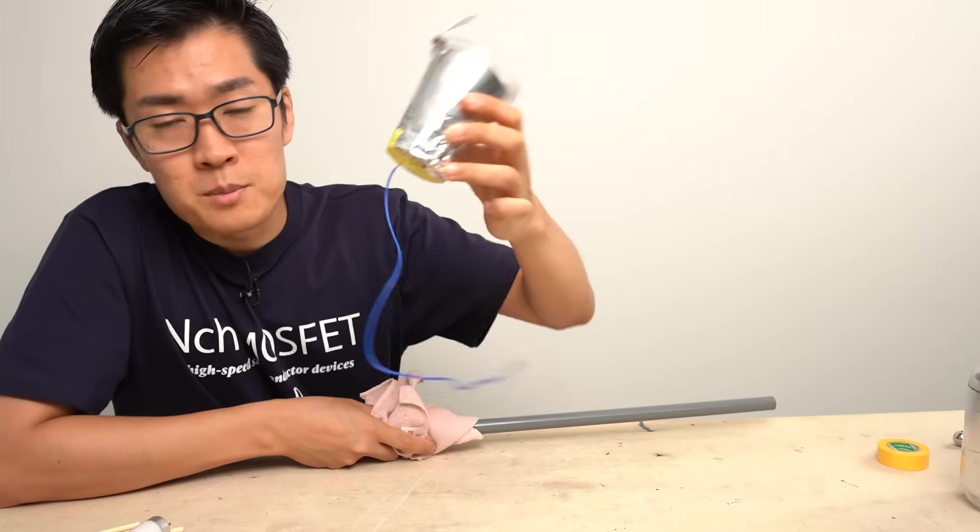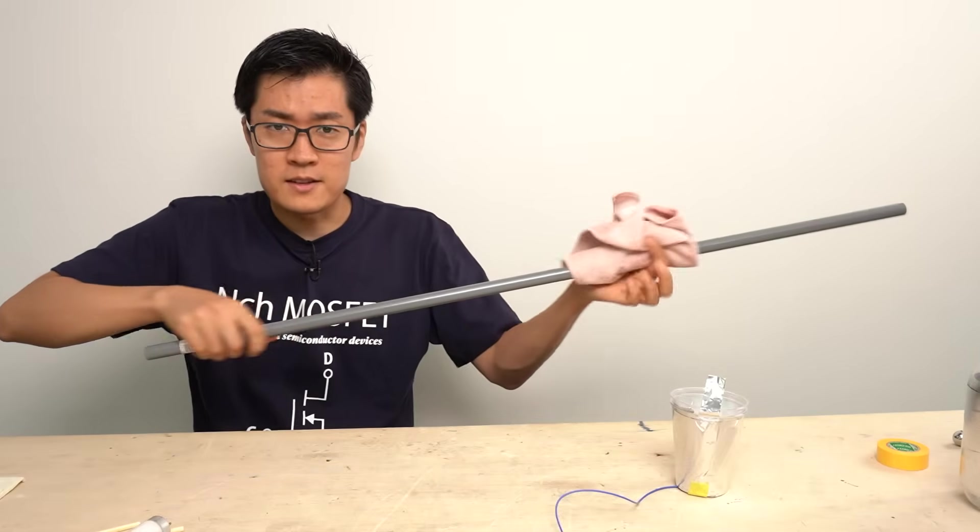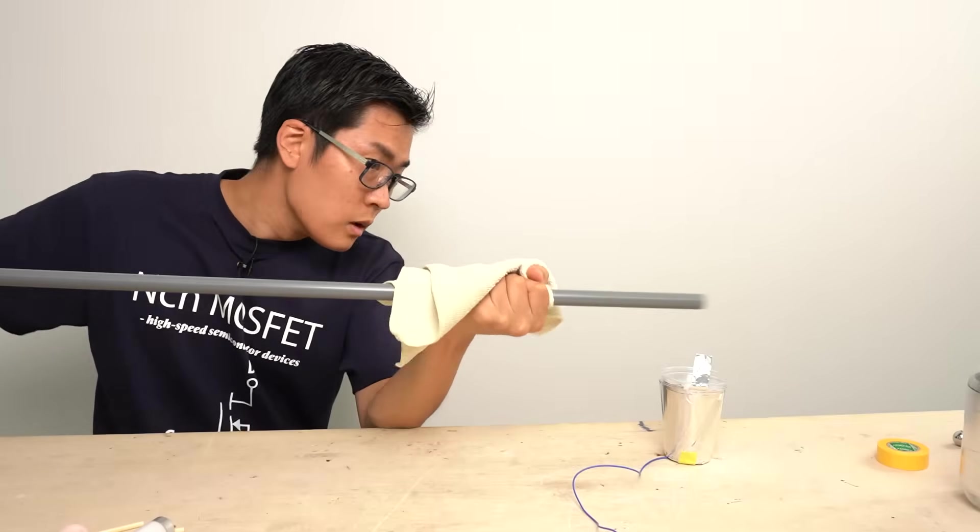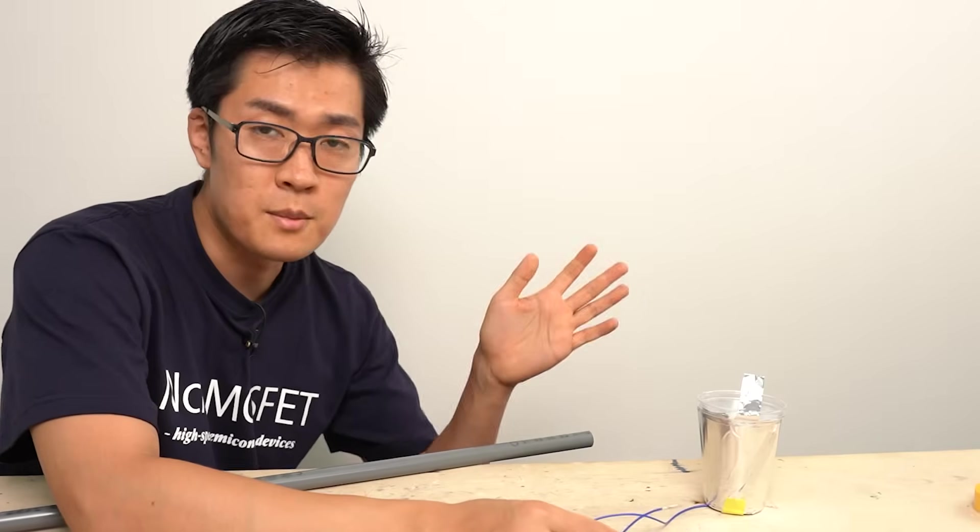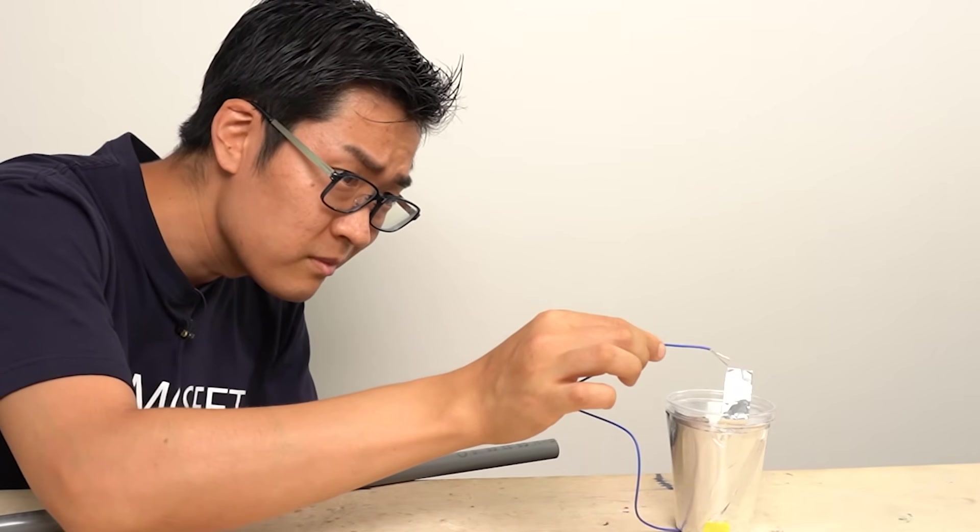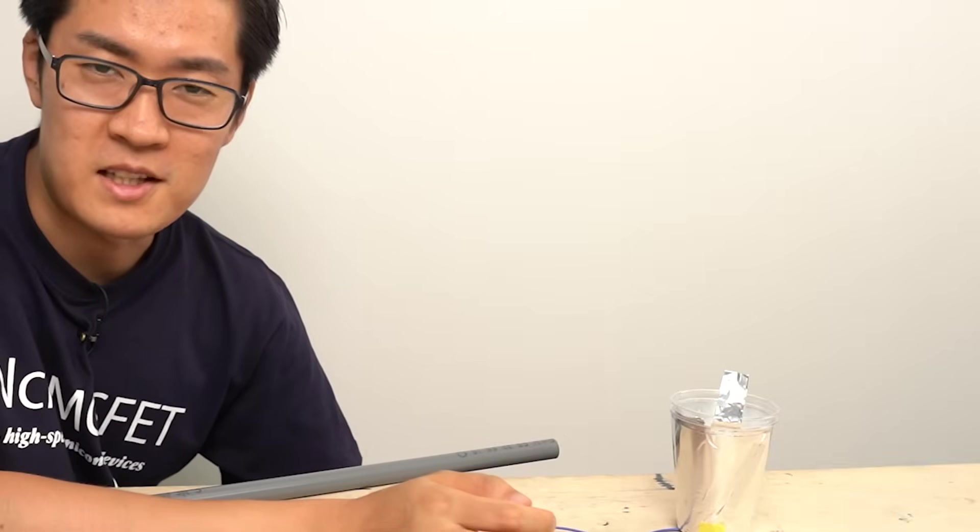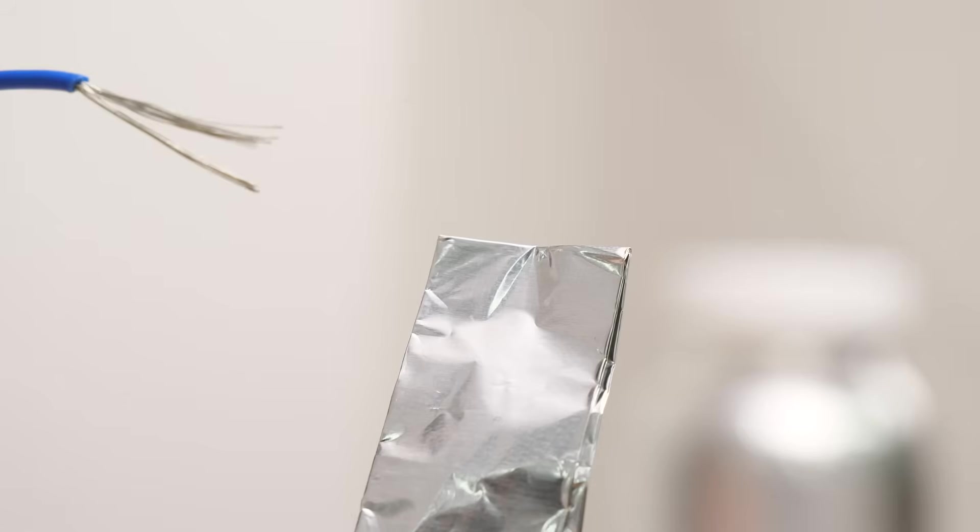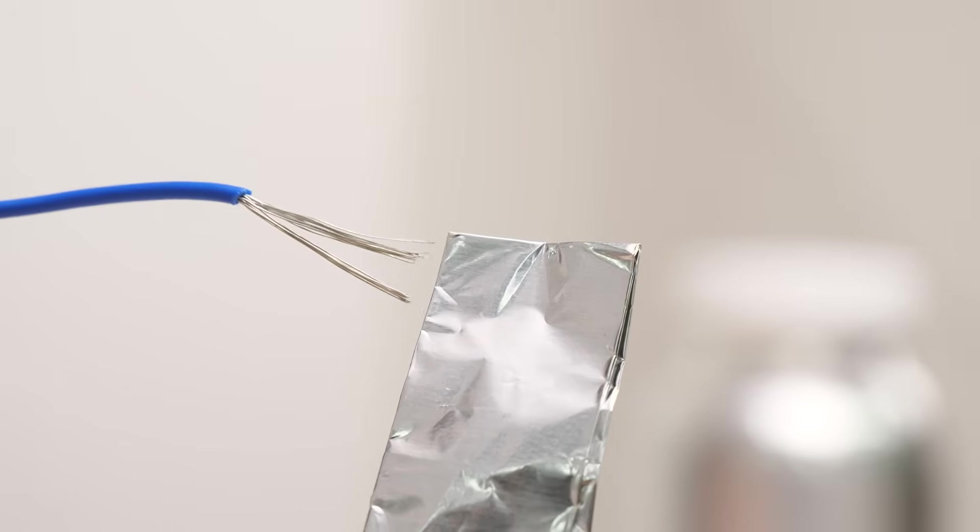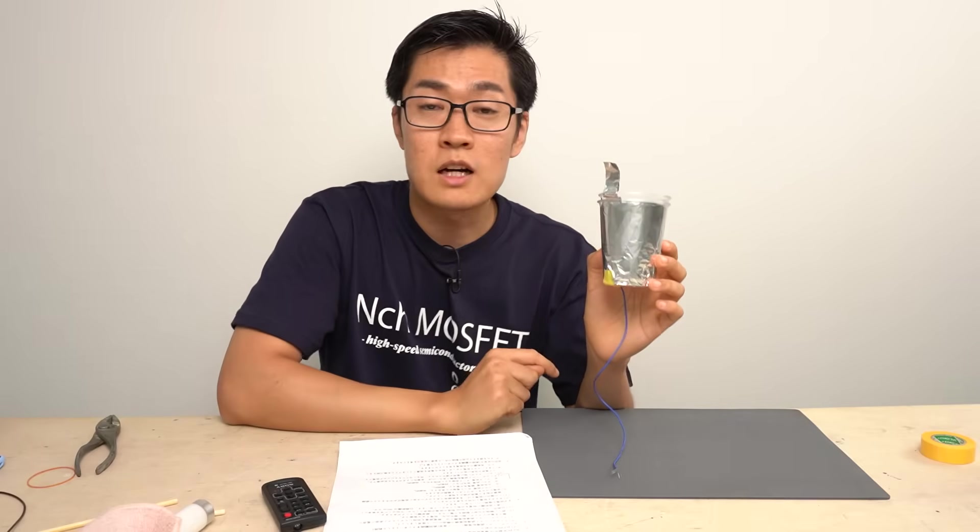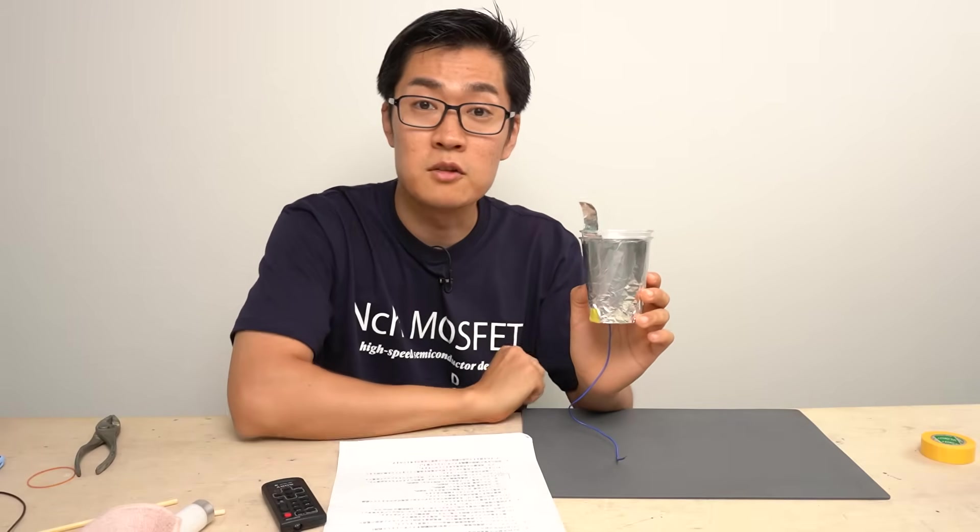I would like to use this simple Leyden jar to show you a spark discharge. When you store charge in a Leyden jar and bring it closer, it discharged just now. This is a spark discharge. Let's have a closer look. We need to accumulate the charge here. However, the charge naturally leaks out from these pointed areas due to corona discharge.